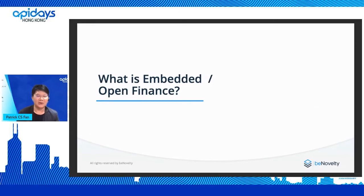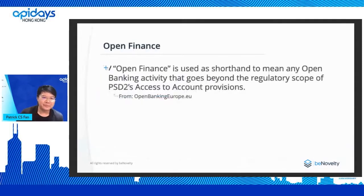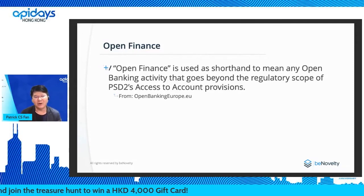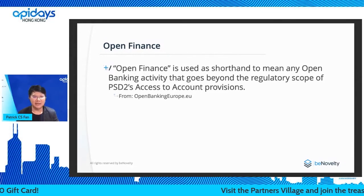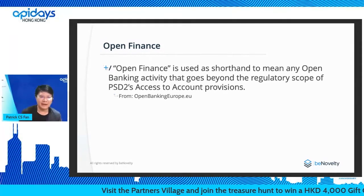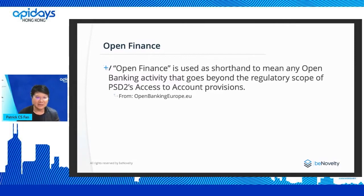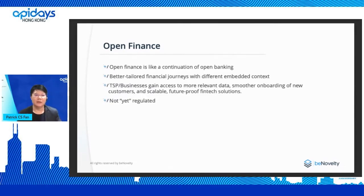So what exactly is embedded or open finance? Simon's talk also mentioned open API, and the next step we hear about is open finance. I extracted this from openbankingeurope.eu. Open finance is not as well defined as open banking, with a lot of different interpretations, but a reasonable one is: open finance is a shorthand which means the open banking activity goes beyond the current regulatory scope — in Europe that's PSD2, in Hong Kong we have the open API framework. It's talking about some activity that uses similar foundations and APIs for different collaborations, but is more market-driven.